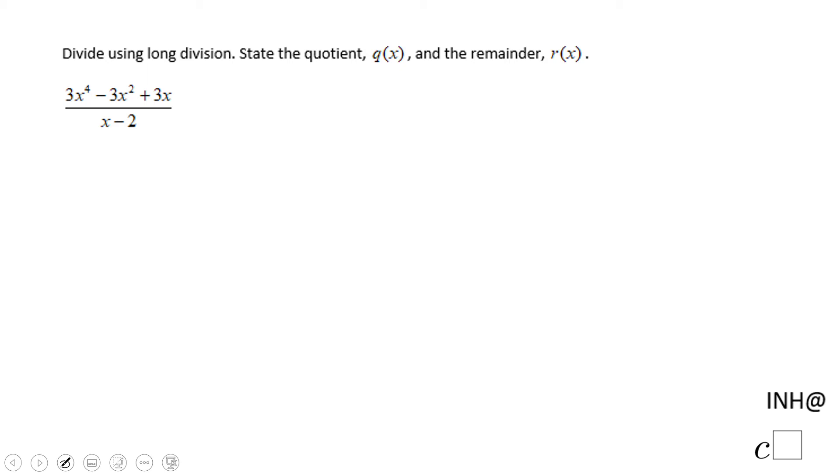Welcome, welcome back to I Need Help at C-Square. In this example, we have to divide using long division, and we need to state the quotient q(x) and the remainder r(x). So how are we going to do that?